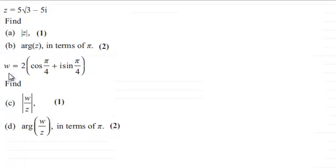Then we're given that the complex number w equals 2 times the cosine of pi upon 4 plus i sine pi upon 4. And we've got to find the mod of w over z for one mark, and then finally in part d the arg of w over z in terms of pi for two marks.